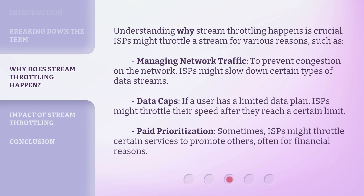Understanding why stream throttling happens is crucial. ISPs might throttle a stream for various reasons, such as: managing network traffic — to prevent congestion on the network, ISPs might slow down certain types of data streams; data caps — if a user has a limited data plan, ISPs might throttle their speed after they reach a certain limit; and paid prioritization — sometimes ISPs might throttle certain services to promote others, often for financial reasons.